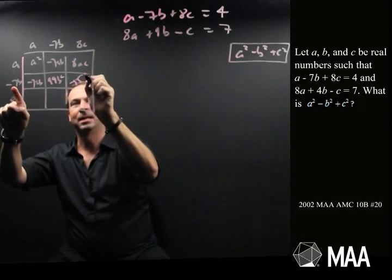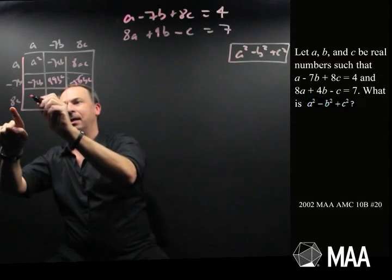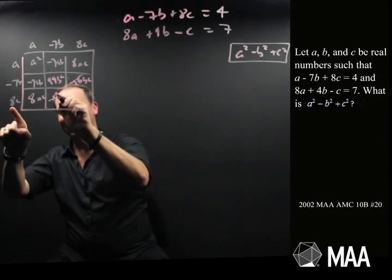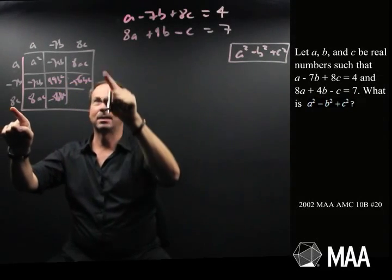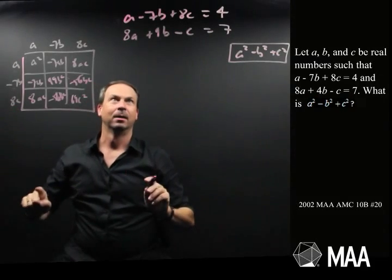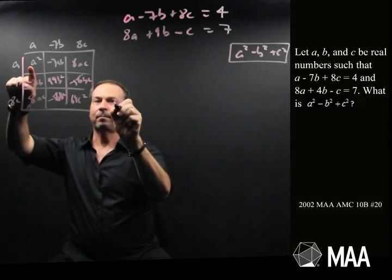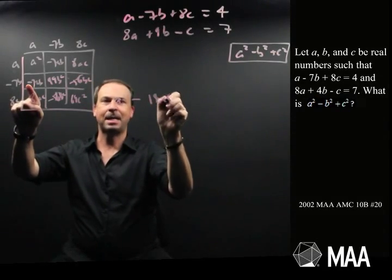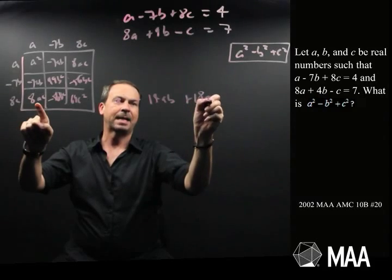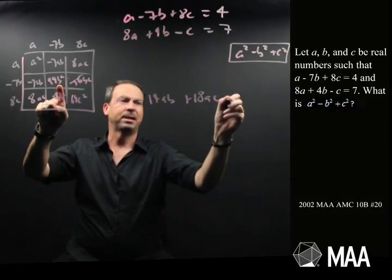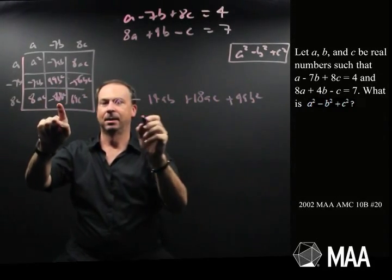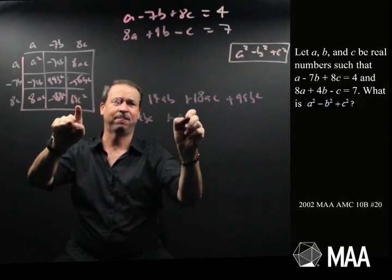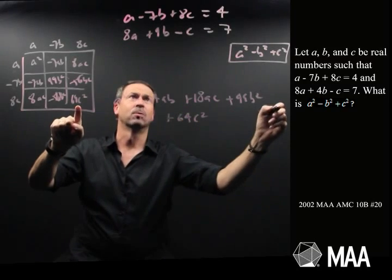Negative 56bc, 8ac, negative 56bc. I hope I can read my handwriting next, 64c squared. So the first equation is a squared minus 14ab plus 16ac plus 49b squared minus, oh gosh, 112bc, if I'm doing that correctly, and 64c squared equals 16.